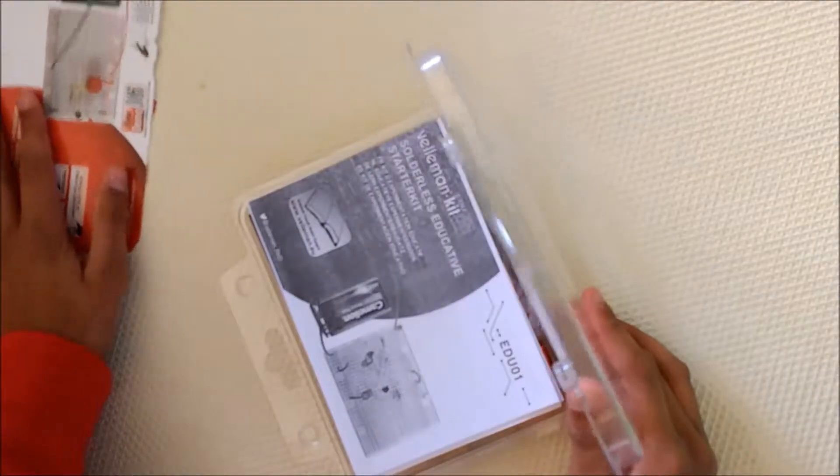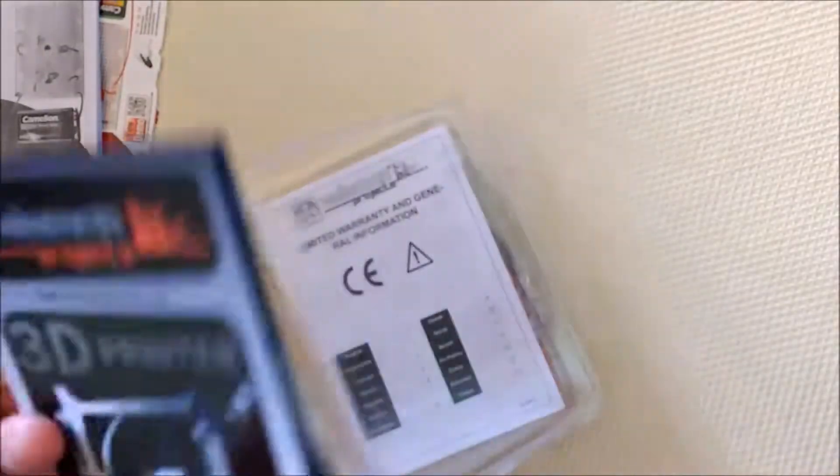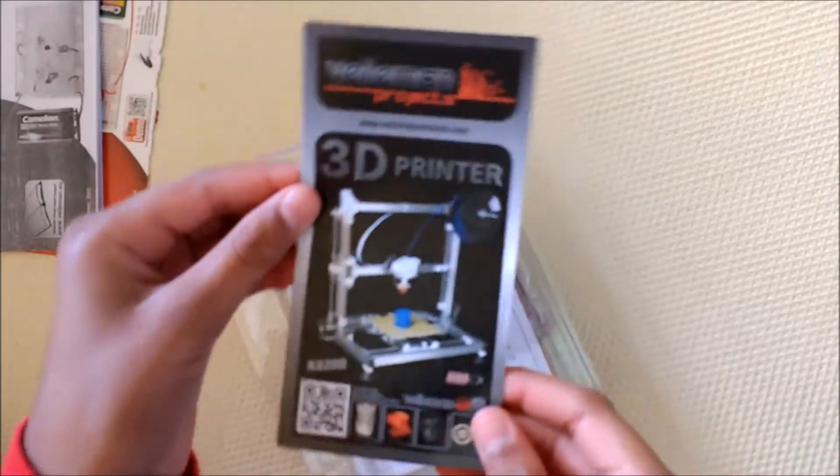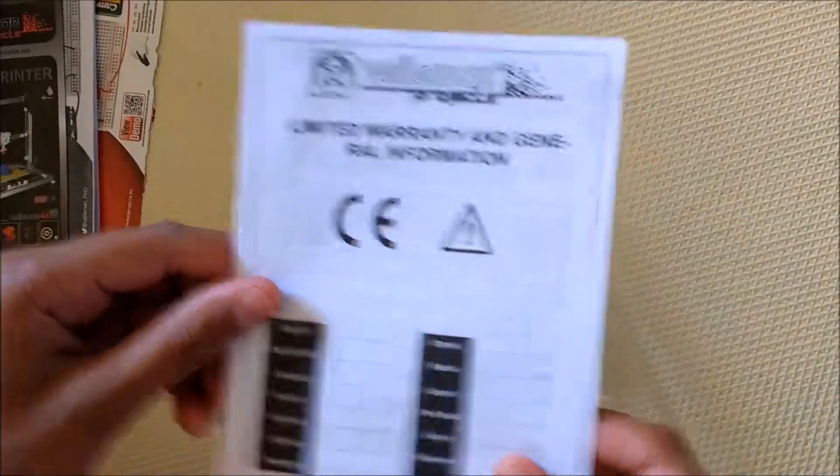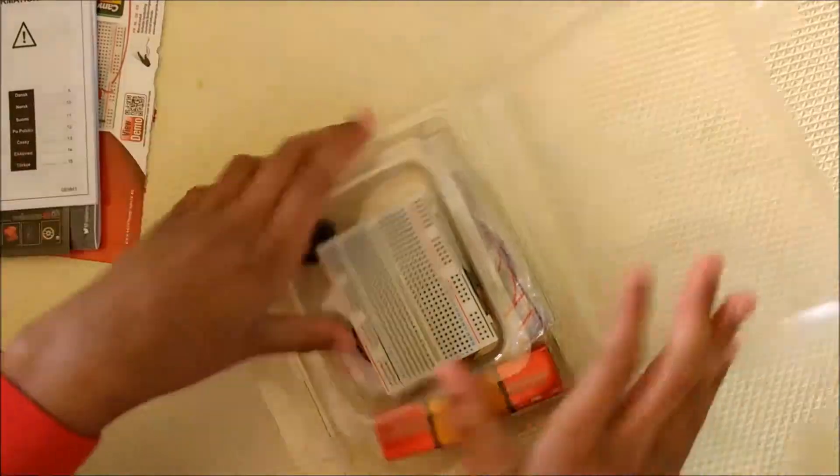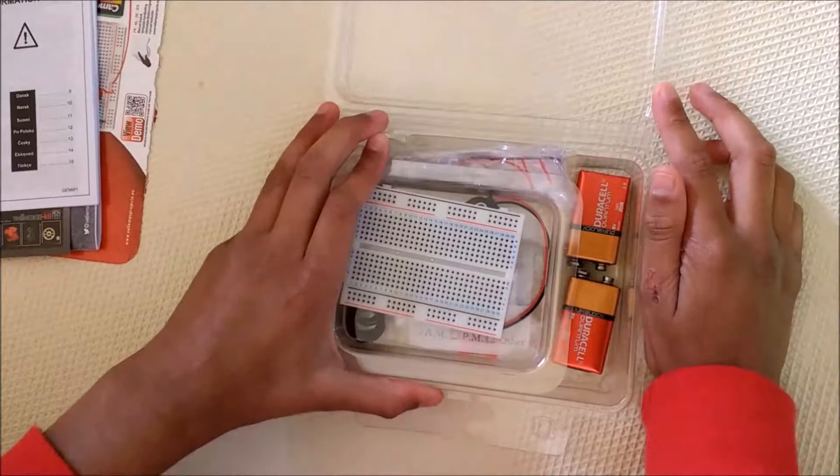Here's the color sheet, and you'll get a manual, a little Veloman projects pamphlet, a warranty and general information, and then you get a bunch of parts which I've already organized and I'll be showing you what they are.